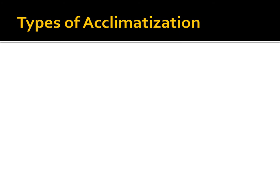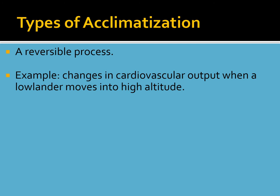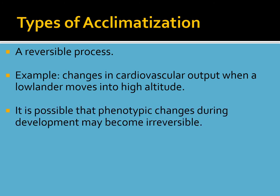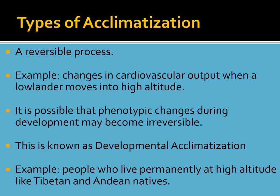Looking at acclimatization — this is a reversible process. An example is changes in cardiovascular output when a lowlander moves into high altitude. Phenotypic changes during very early development or fetal development may become irreversible — this is known as developmental acclimatization. People who live permanently at high altitudes, like Tibetan and Andean natives, have a distinct set of physiological and genetic adaptations that allow them to live at high altitude — and we'll talk about that in another lecture.